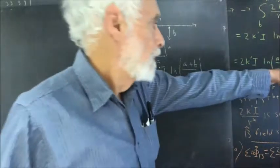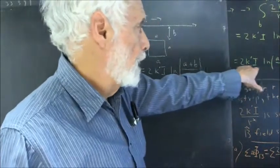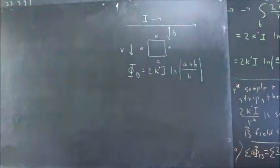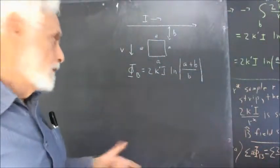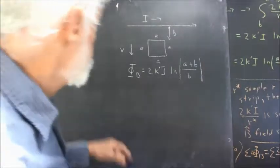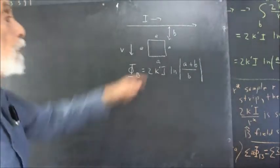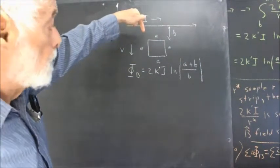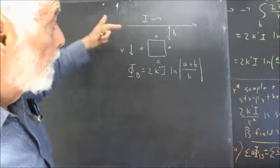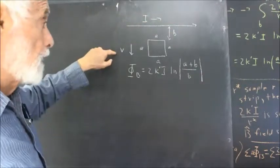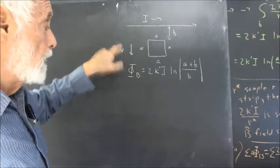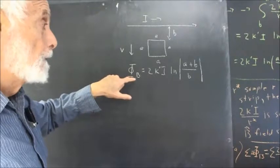From the preceding, we have flux = 2k prime i times the natural log of (a + b) over b. Continuing the last situation, if we pull this loop away from the x-axis at velocity v, then what is the flux?